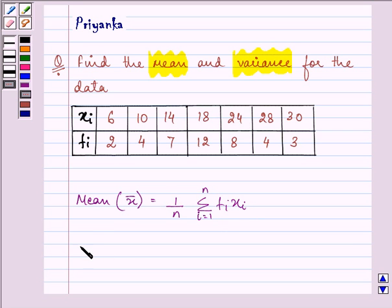And where n equals summation fi where i equals 1 to n. Now here the observations are the given values which we call as x1, x2, x3 and so on.